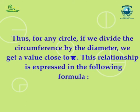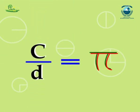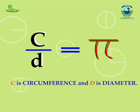Thus, for any circle, if we divide the circumference by the diameter, we get a value close to pi. This relationship is expressed in the following formula: c/d is equal to pi, where c is the circumference and d is the diameter.